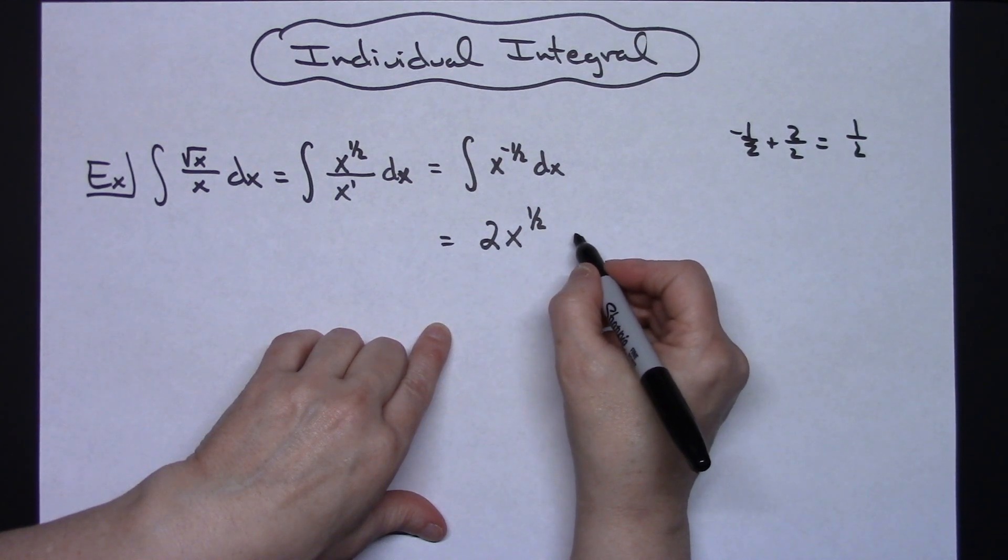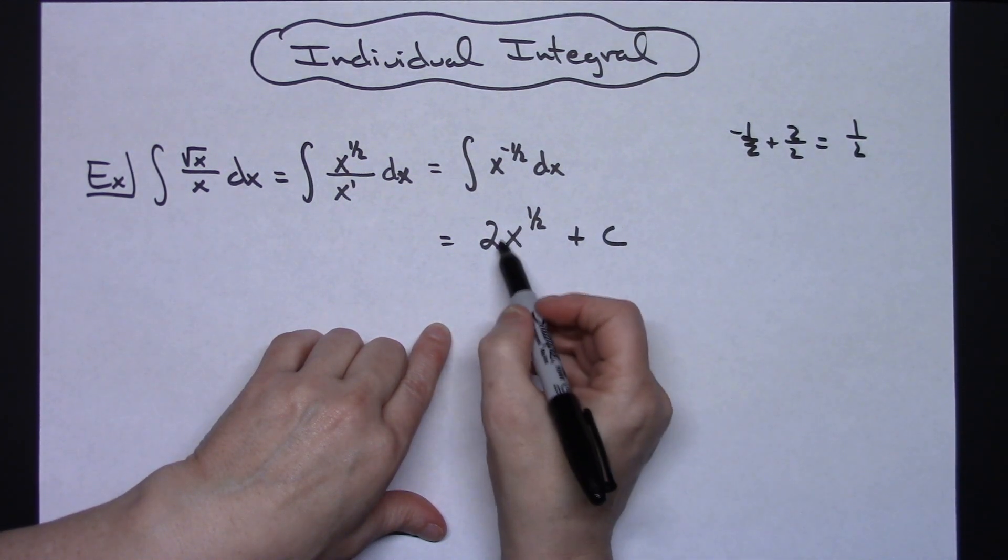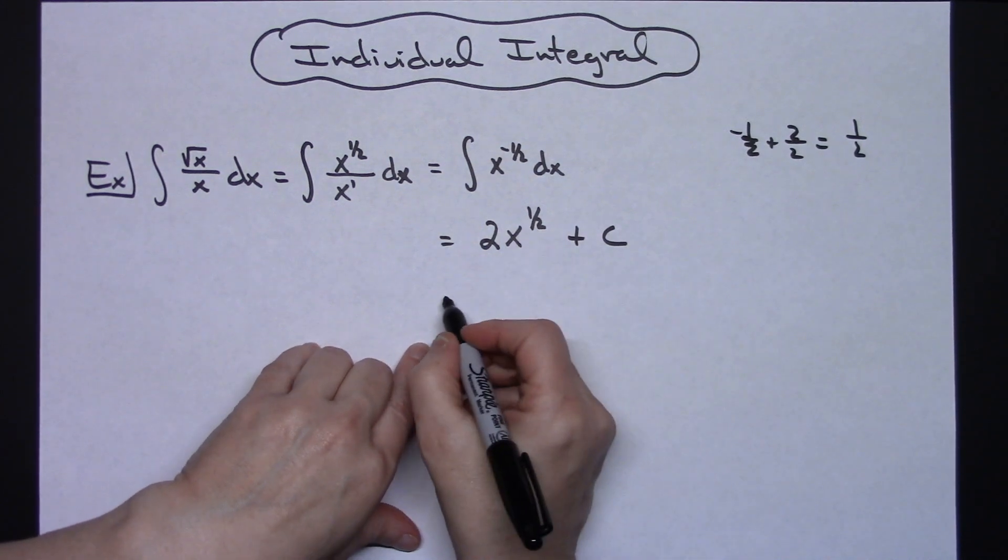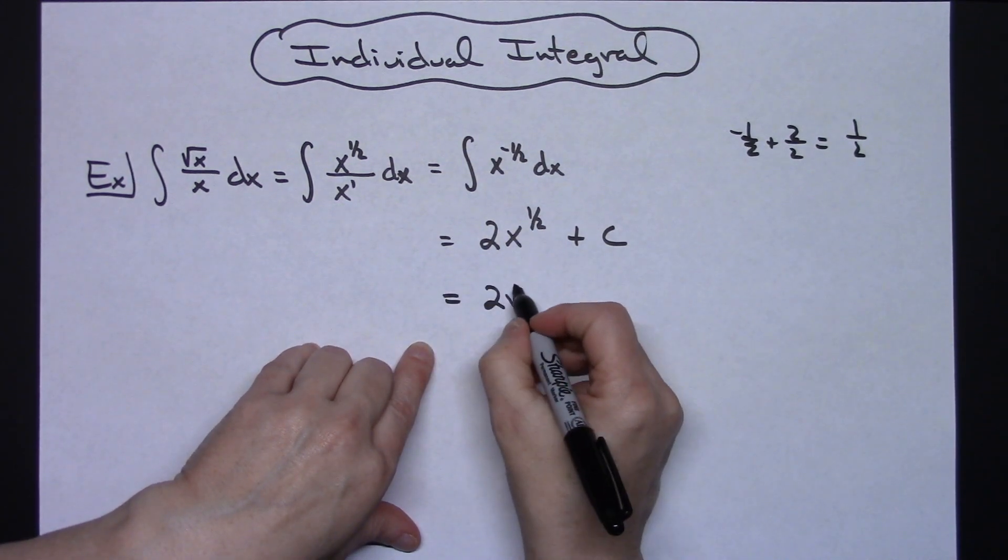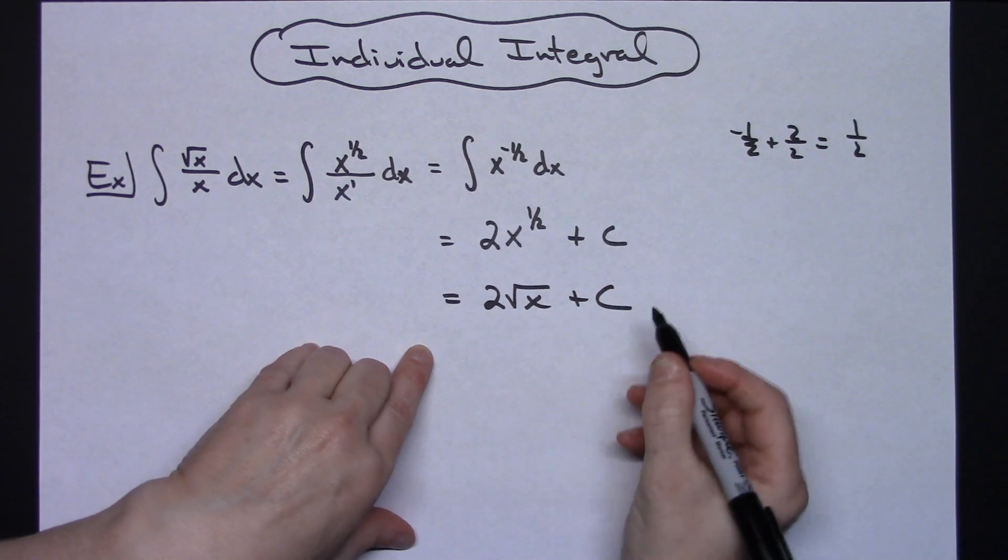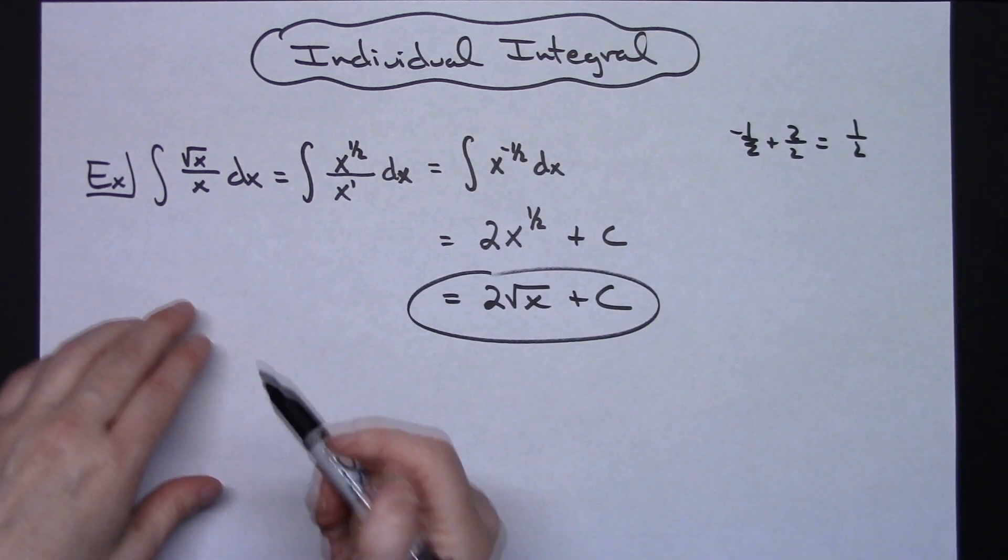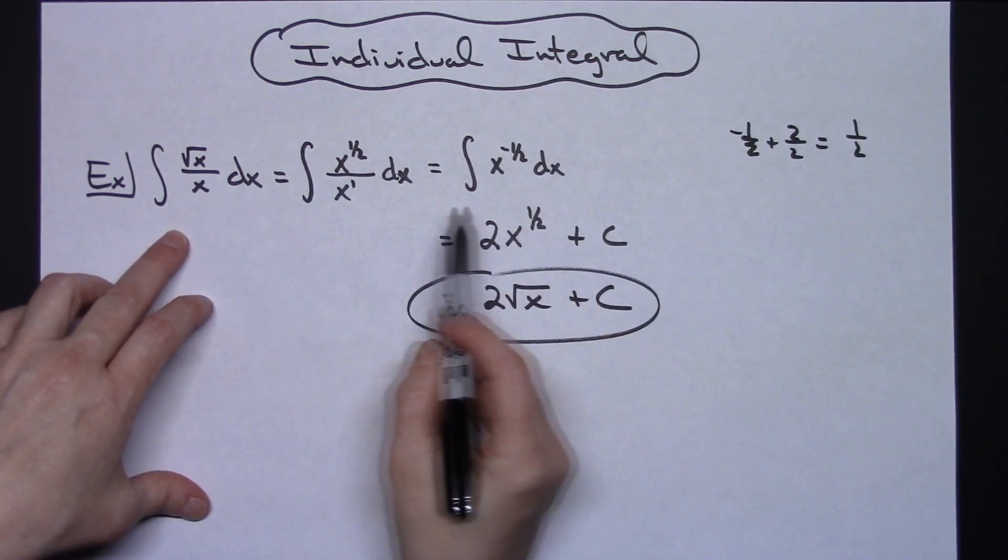And then plus c, and then the only other thing you might want to do is since that is an x to the 1/2, go ahead and write that as the square root of x. So actually a pretty simple integral if you get yourself started here.